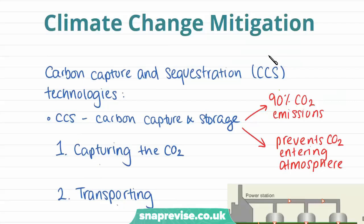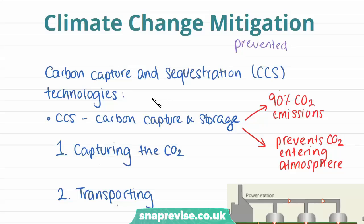Now we're going to look at ways that this process of global warming can be mitigated, which means prevented. This is through climate change mitigation techniques. The first one we're going to look at is carbon capture and sequestration, otherwise known as carbon capture and storage.